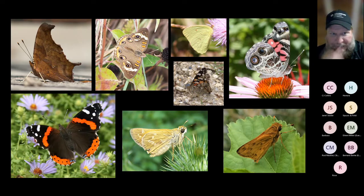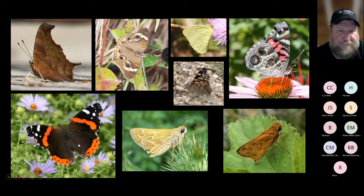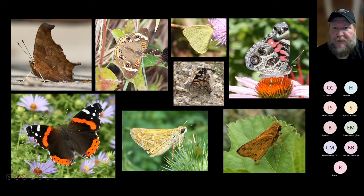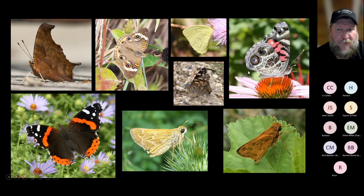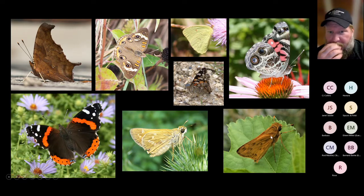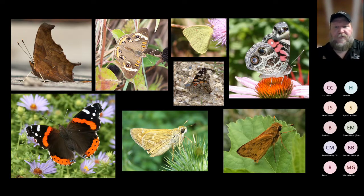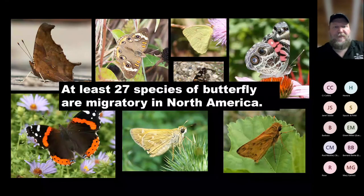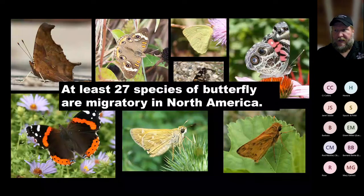Some of these migratory butterflies include the Question Mark, Red Admiral, Buckeye, one of the sulfurs, Painted Lady, American Lady, a skipper, and the Fiery Skipper. Dragonflies are another migratory insect, and they do a lot of the same things birds do — waiting for the wind at their back, waiting for the right time. A common green darner is a really good example of a migratory dragonfly.